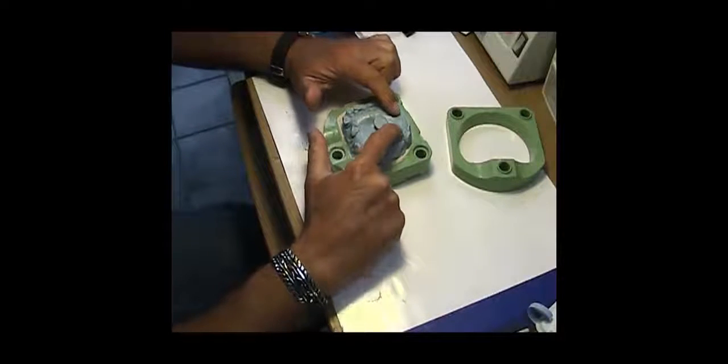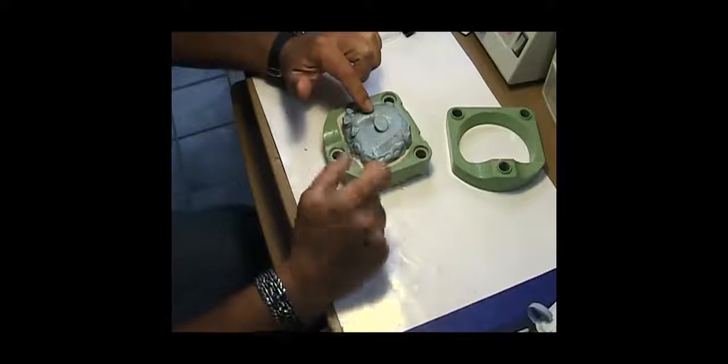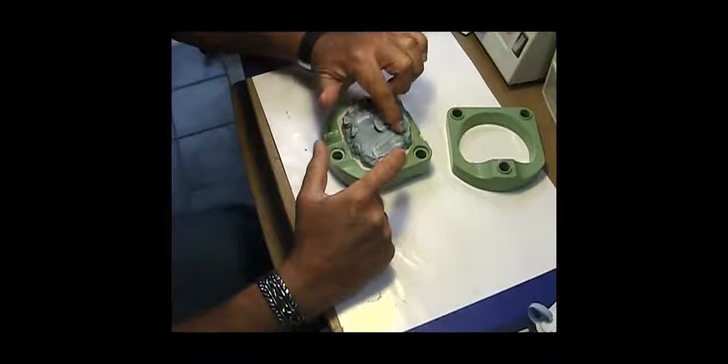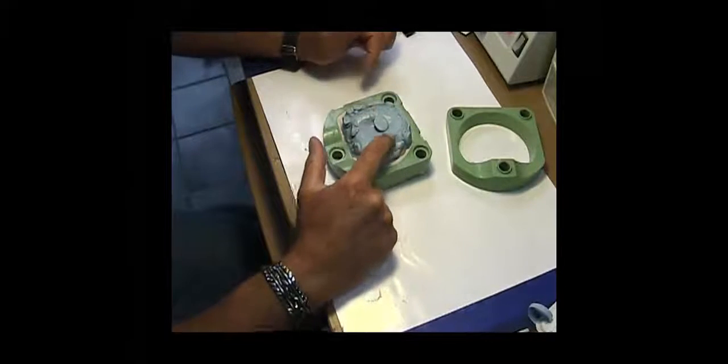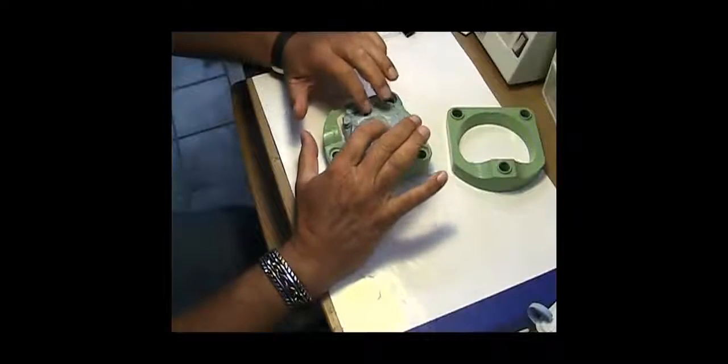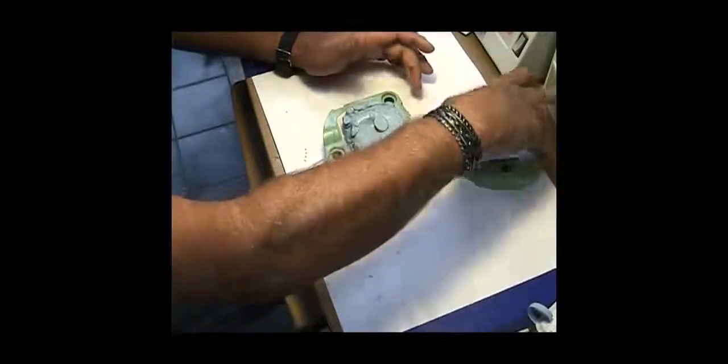I always make sure to put the cusp tips through the putty just slightly so you can see them. This gives a rigid, stationary point or foundation for when I pour the stone on the secondary cap.